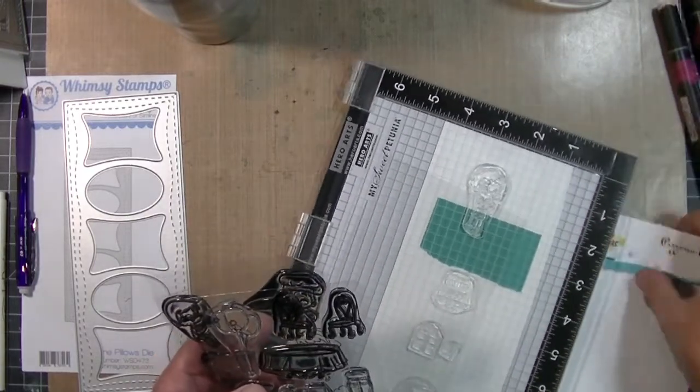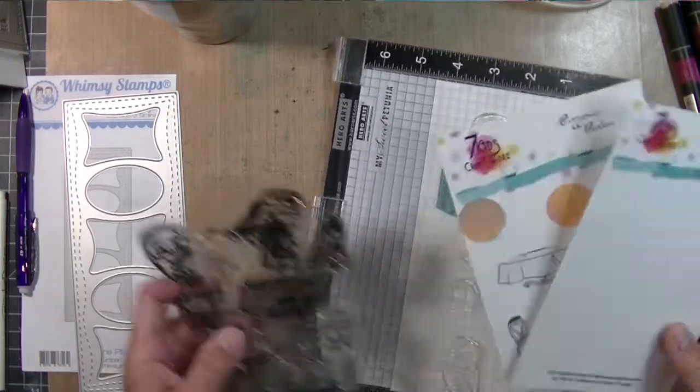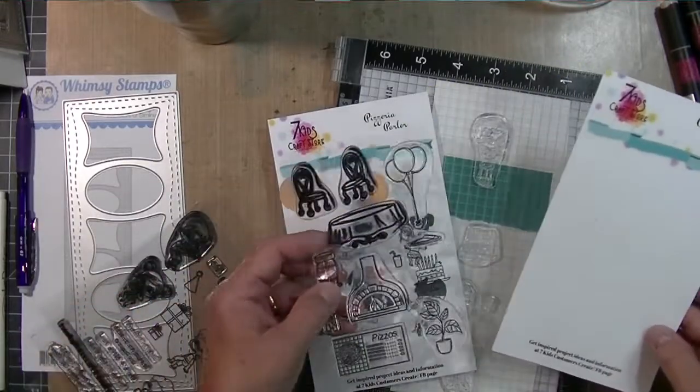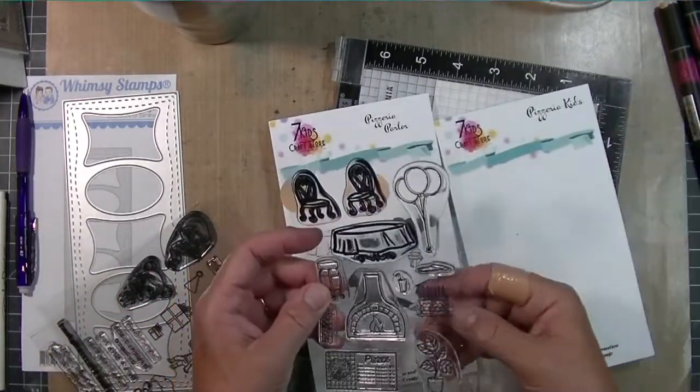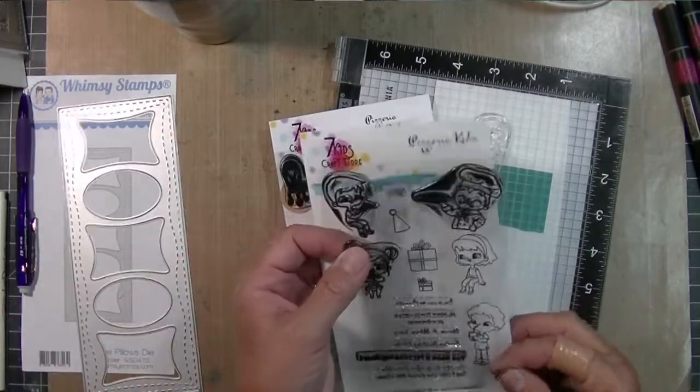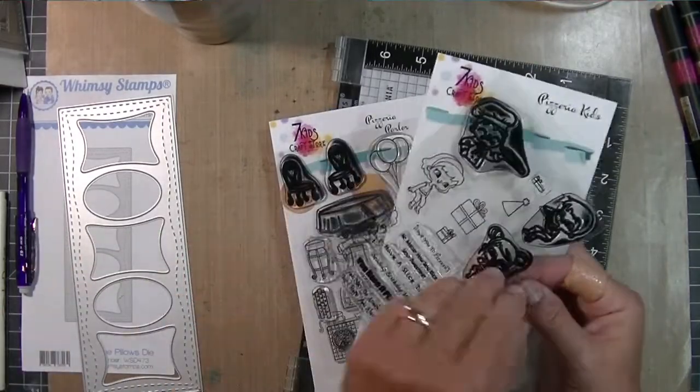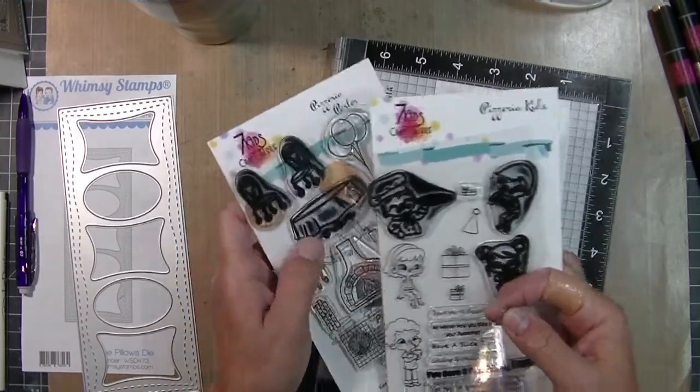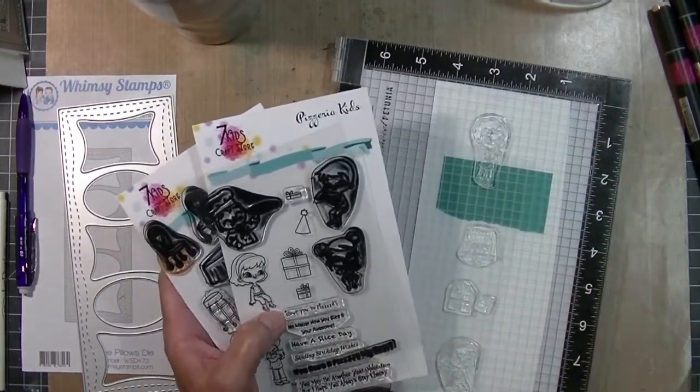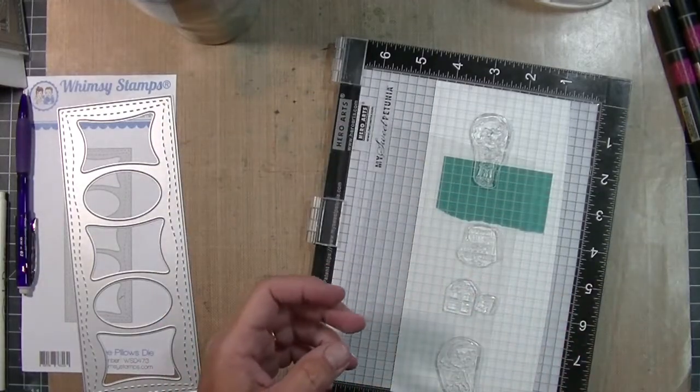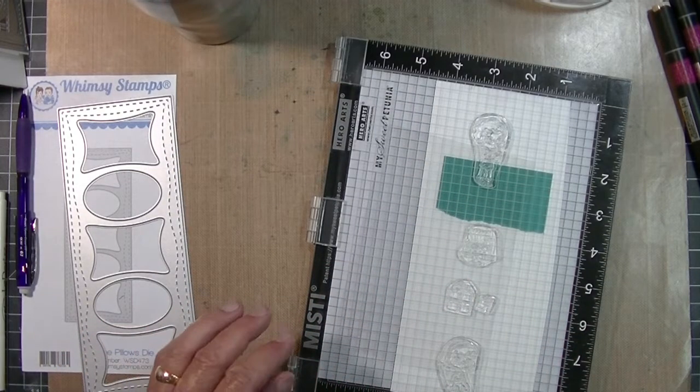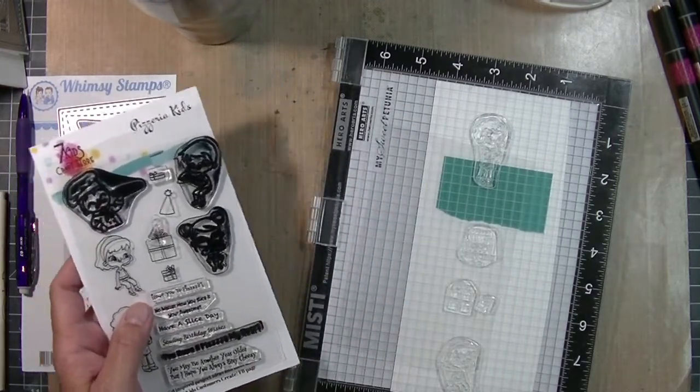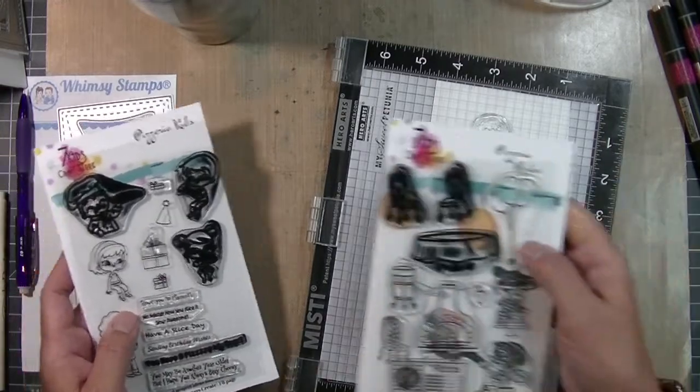I did a video a couple of weeks ago to help showcase this, the August part of the August release from Seven Kids Craft Store. I did a card creating a scene with some of the pieces of these two sets and I really enjoyed creating that and I don't feel like I'm done playing with this set at all because besides being a pizzeria scene and a pizzeria parlor, it's also a birthday card set.